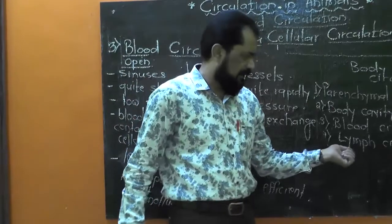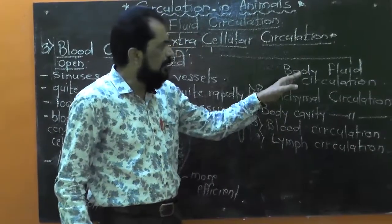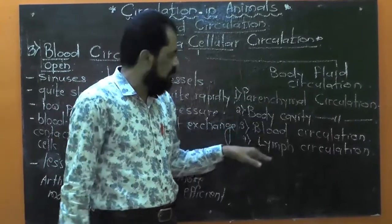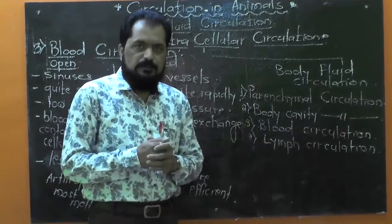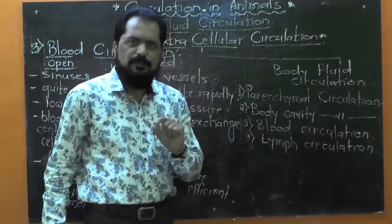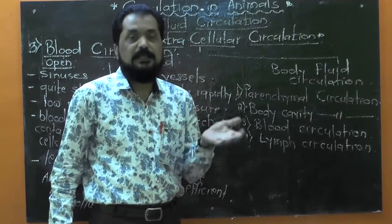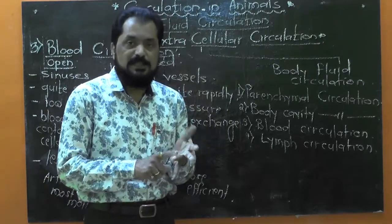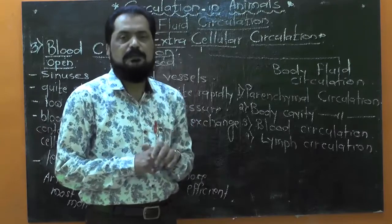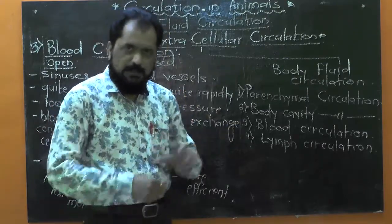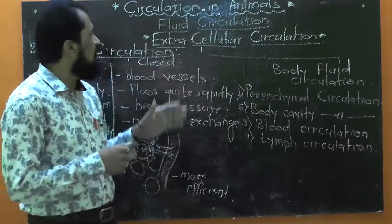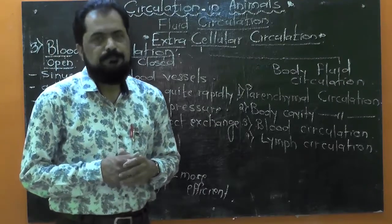The last type is lymph circulation. Lymph is also one of the extracellular fluids, and along with lymph vessels and lymph capillaries, it forms the lymphatic system, through which lymph and different materials are carried. It is seen in vertebrate animals, about which we shall study later. In this manner, in today's lecture we have completed the introductory part of circulation in animals. Thank you and bye.